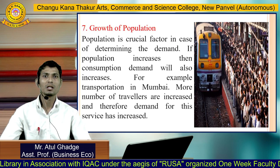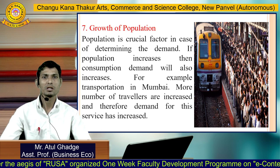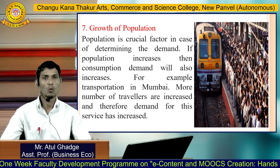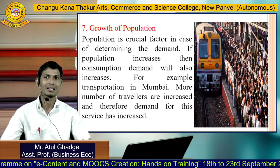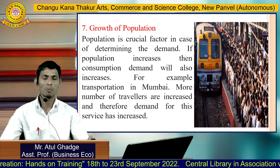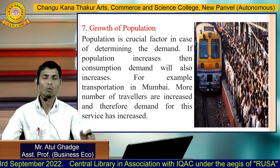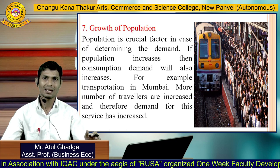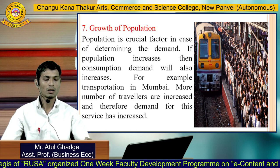Next is growth of population. Population is a crucial factor in determining demand. If population increases, consumption demand also increases. For example, transportation in Mumbai — more travelers means demand for this service has increased. Additionally, the distribution of population matters: in an area with more senior citizens, demand for medicines increases; in an area with more children, demand for toys is more. So demand depends on both the distribution and growth of population — not only price, income, or tastes and preferences.